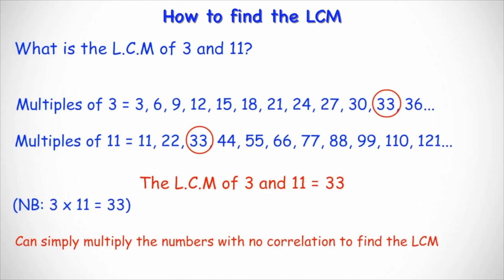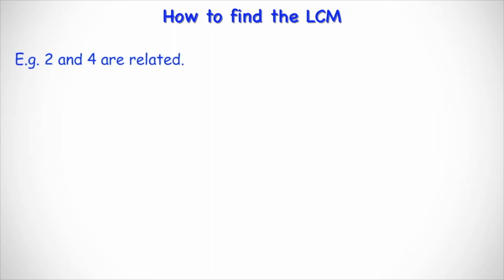This doesn't work for numbers that do have a correlation or connection. For example, two and four, two multiplied by four is eight. But the LCM of two and four is four and not eight. So just bear this in mind.